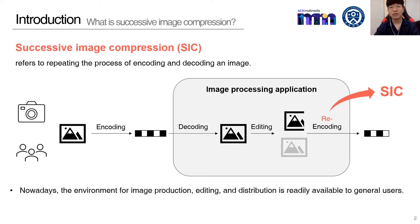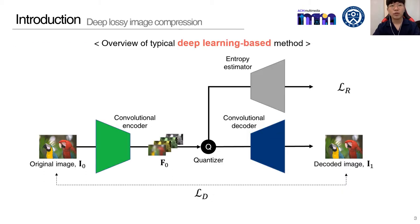As multimedia and communication technology advance, the environment for image production, editing, and distribution is readily available to general users. For this reason, successive image compression occurs more often than before. Recently, deep learning has been applied to lossy image compression. I'd like to remind you about the overview of a typical deep learning-based method.